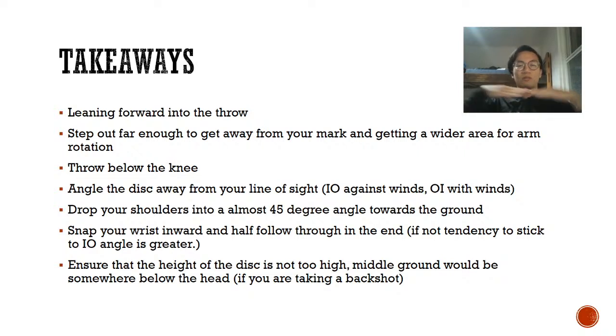Another thing is to drop your shoulders into an almost 45 degree angle towards the ground. A lot of people throw it level with the shoulders straight, just flicking your whole body up. If you don't drop your shoulders, you'll not be able to throw below the knee. Instead, you'll be throwing around the waist and it's just going to float high up. Always snap your wrist inwards and half follow through to the end. You don't have to follow all the way through just because you don't want to hit your mark. If not, the tendency to stick to an IO angle is greater, so you have to pay attention to your wrist.